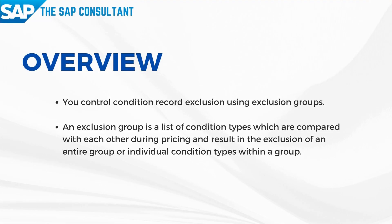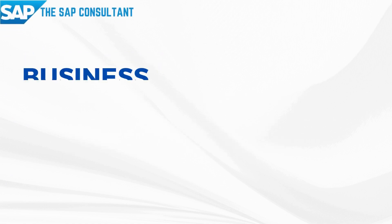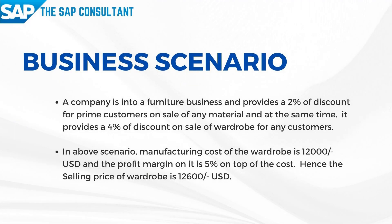Let's take a business scenario for better understanding. A company is into a furniture business and provides a 2% discount for prime customers on sale of any material. At the same time, it provides a 4% discount on sale of wardrobe for any customers. In the above scenario, the manufacturing cost of the wardrobe is 12,000 USD and the profit margin on it is 5% on top of the cost. Hence, the selling price is 12,600 USD.